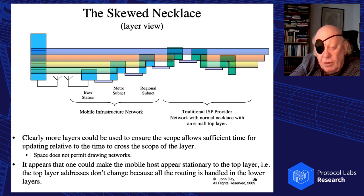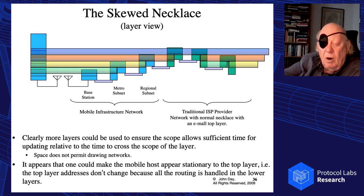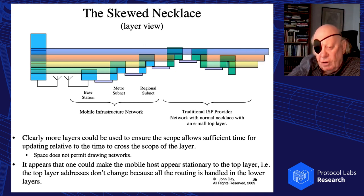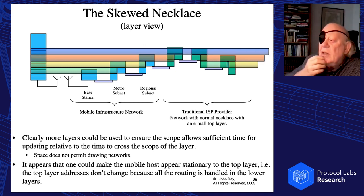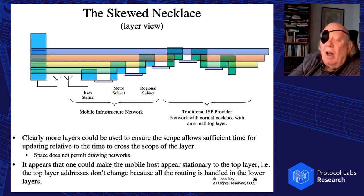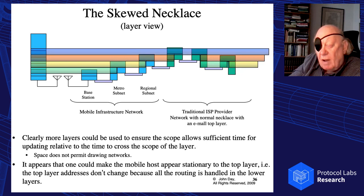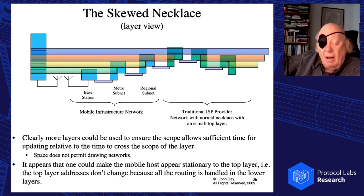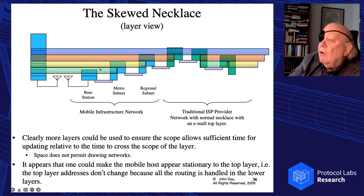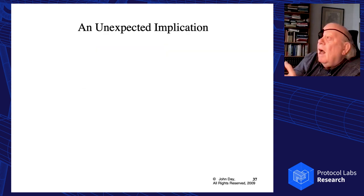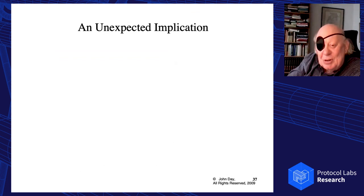The number of layers doesn't have to be constant. If you're in an area without much traffic and have very large cells at the bottom, you can have fewer layers. If you're in the middle of a city with a high density of traffic, you have more layers. Notice that any box here only handles the same number of layers. There was an unexpected implication here.